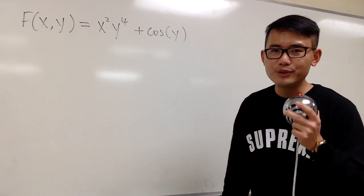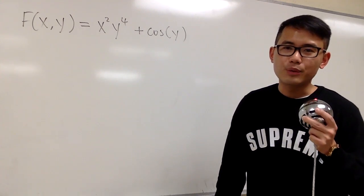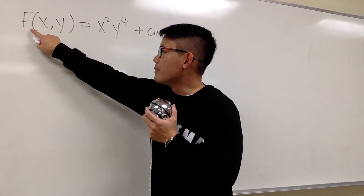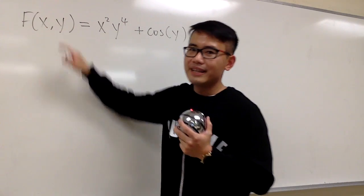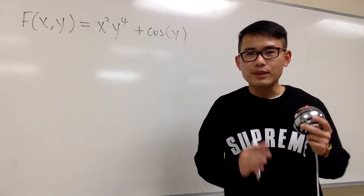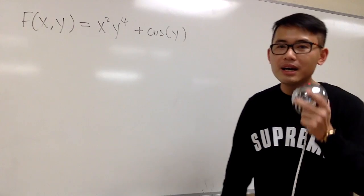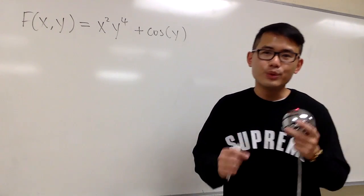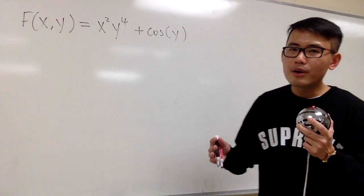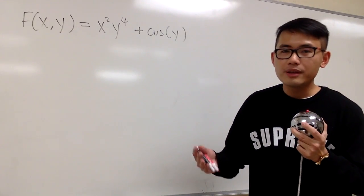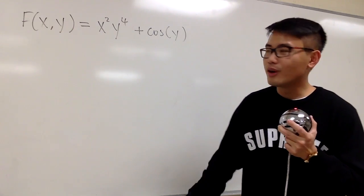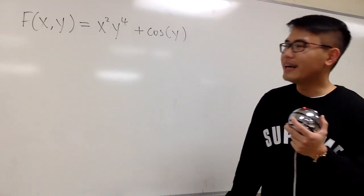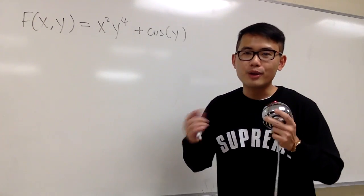Here's the idea behind how to check if a differential equation is exact or not. I'm going to demonstrate that with this function. We are talking about f as a function in terms of both x and y, because the solution to an exact equation is f equal to a constant. When we talk about exact equations, we are talking about the total differential of a multivariable function, and we also have to talk about the partial derivative.